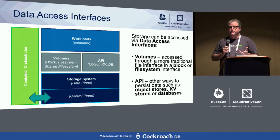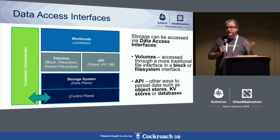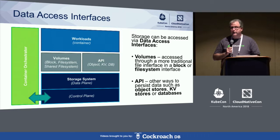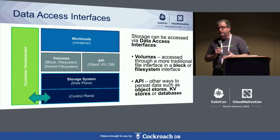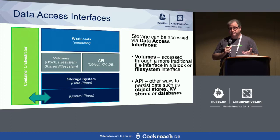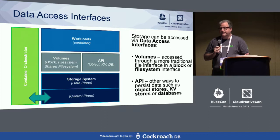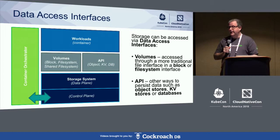In the most simplistic fashion, block interfaces start off with a local disk — a disk is fundamentally a block interface, and on top of a disk you place a file system, which provides the interface most applications use. Some types of databases can access block devices directly, but in general applications are accessing file systems. On the other side of the spectrum, we have the API bucket — where workloads access storage through a network interface rather than an OS interface — including object stores, key-value stores, and databases.